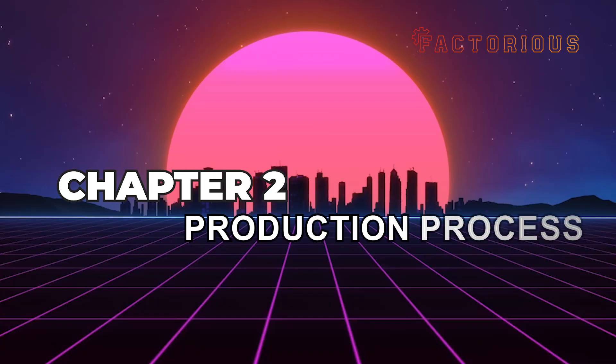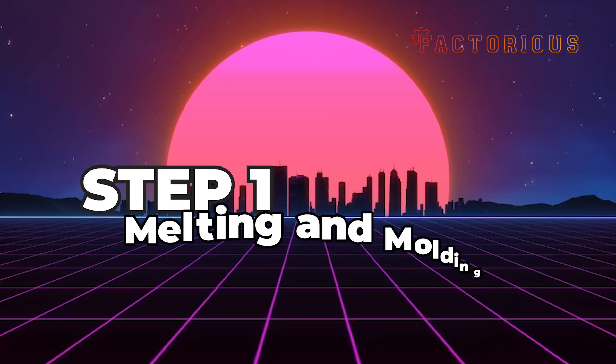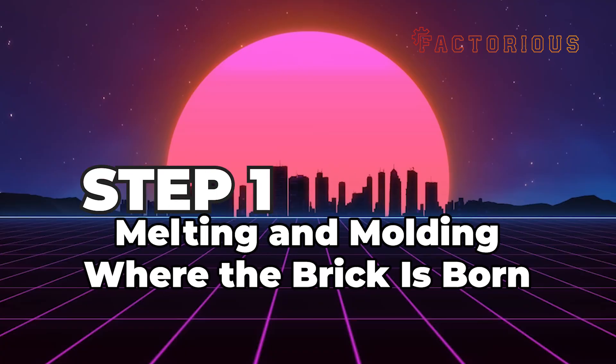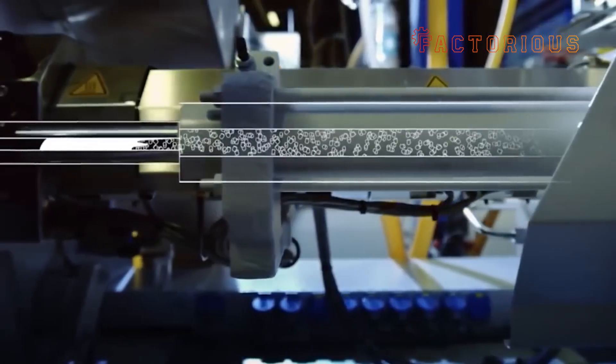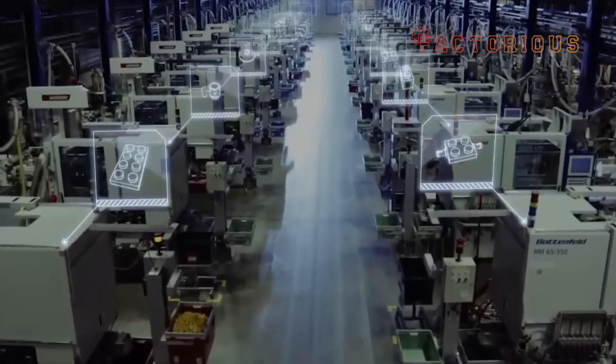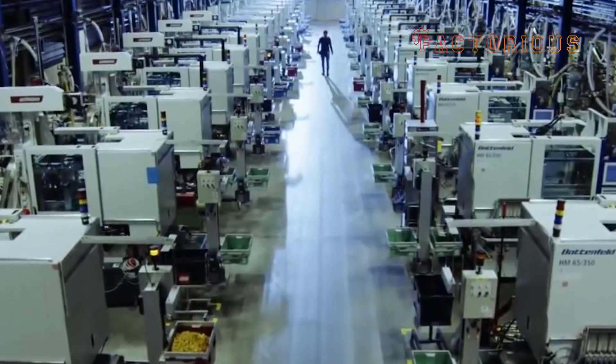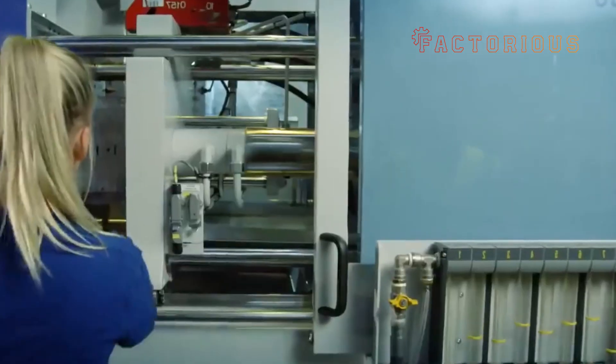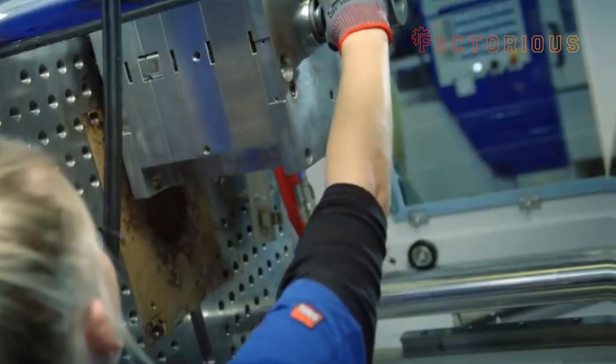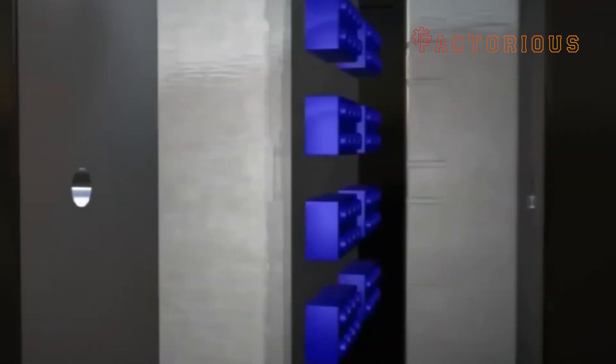Speaking of which, let's move to the next step, where the magic really begins. Chapter 2. Production Process Step 1. Melting and Molding Where the Brick is Born. Inside Lego's molding halls, it's a bit like walking into a sci-fi factory. Hundreds of machines hum and click non-stop, running 24 hours a day, 7 days a week.